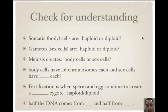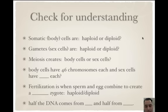Somatic body cells are diploid. Gametes, which are sex cells, are haploid — they have half the amount, only one of each set. Meiosis creates sex cells. Body cells have 46 chromosomes each, and sex cells have 23. Fertilization is when sperm and egg combine to create a diploid zygote. Half the DNA comes from mom and half from dad.